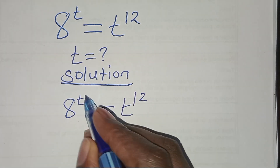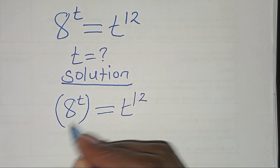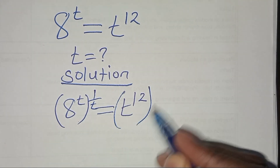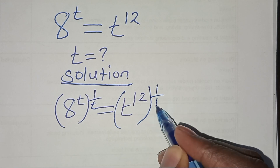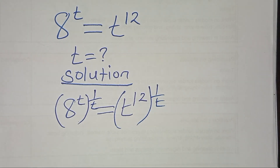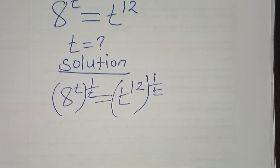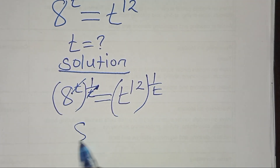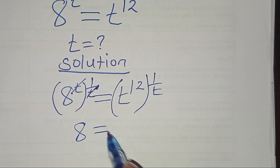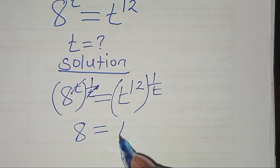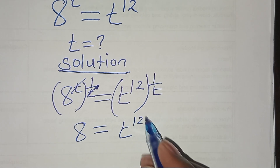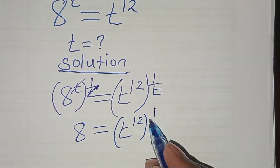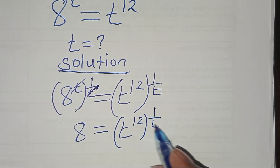To do that, let's multiply both sides by 1 over t. Simplifying, we have 8 is equal to t to the power 12 multiplied by 1 over t.